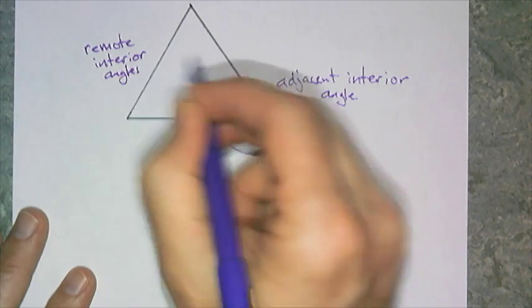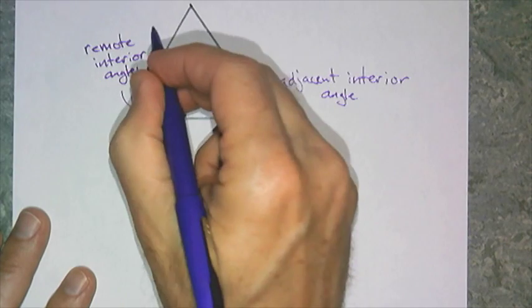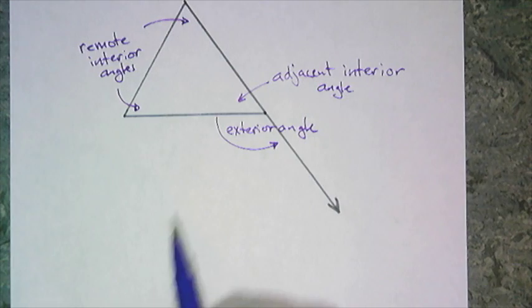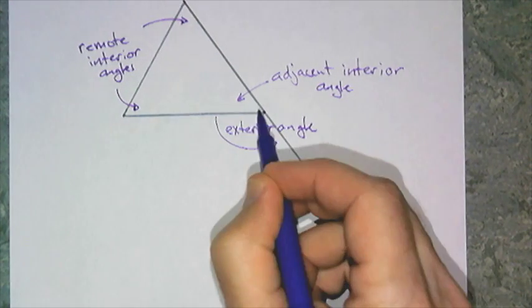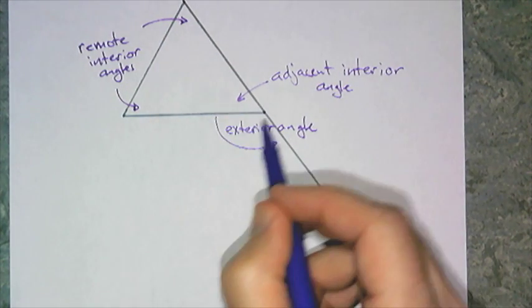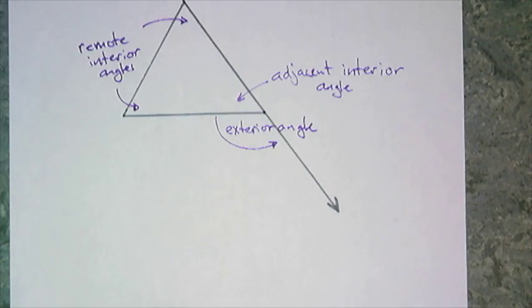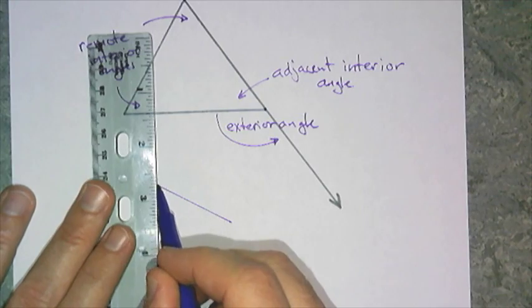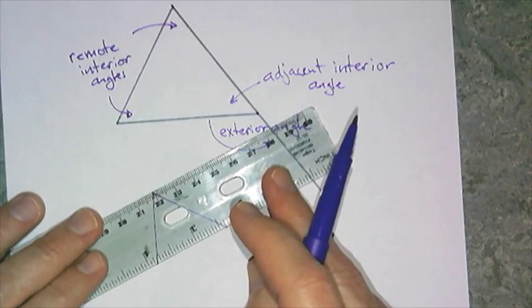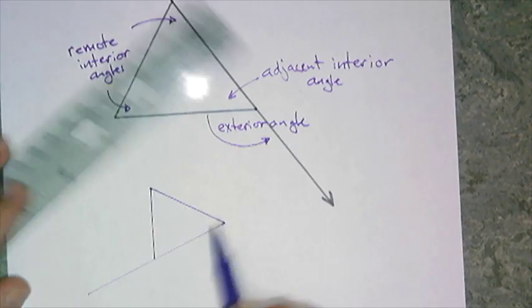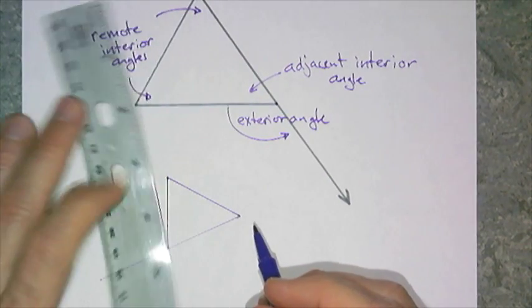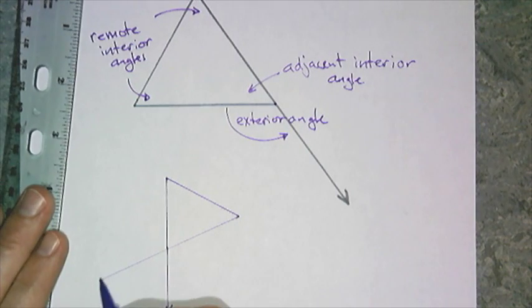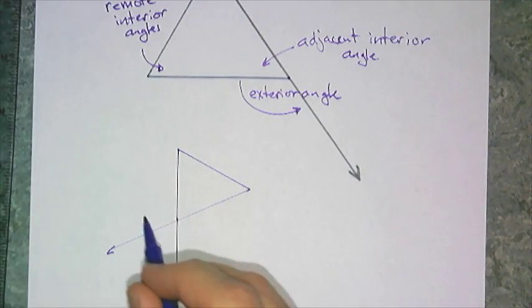And I think I have done this in an earlier video. And for every vertex, you can actually make two exterior angles. So if I make a triangle and I extend this side, here is an exterior angle. But if I extended this side, I would have made a different exterior angle.